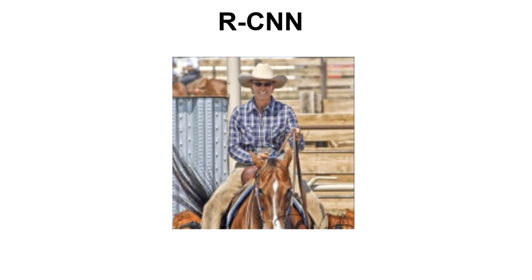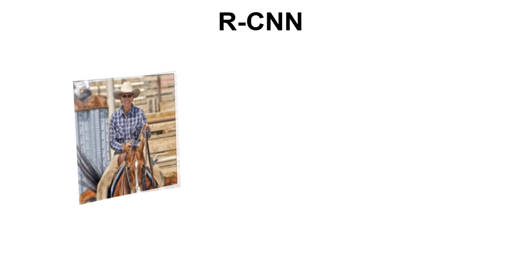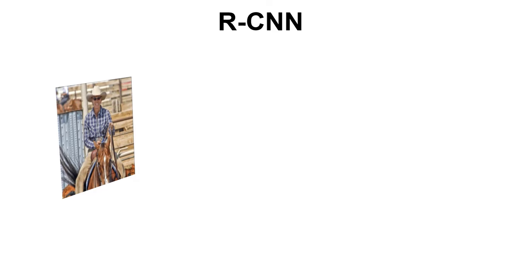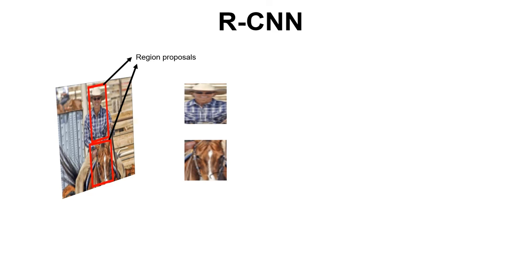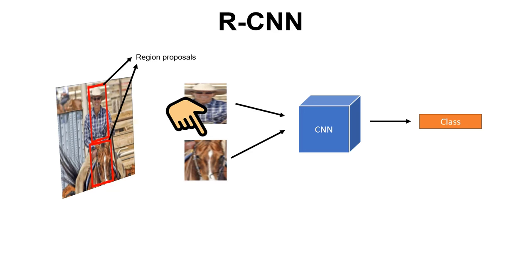So given this image, the selective search might propose these bounding boxes that we call region proposals. One good thing is that it gives us like 2000 region proposals within one or two seconds. First we have an image, then we run selective search and it generates some region proposals. Next we extract these region proposals from the original image, mark them to be all squared and suitable for a CNN module that receives them and produces a class. But the bounding box generated by selective search algorithm is not precise.